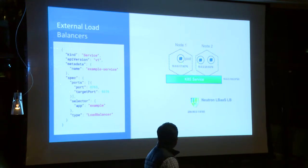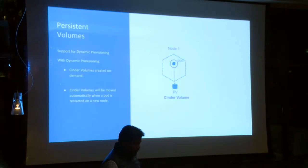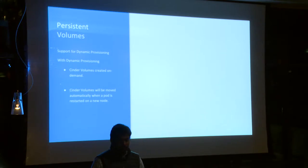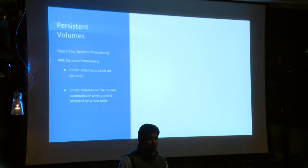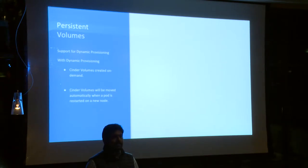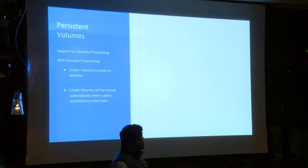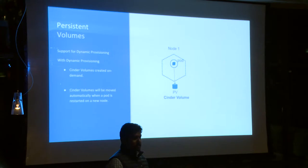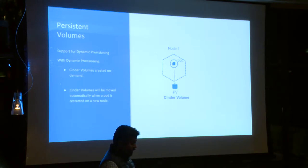The next biggest advantage is persistent volumes. With persistent volumes, say you have some stateful workloads as part of your deployment and they need persistent storage. With the cloud provider implementation, it can talk to OpenStack Cinder to create a volume and attach it to one of the Nova nodes running your Kubernetes services. Kubernetes will take care of mounting the specific Cinder volume onto the pod.